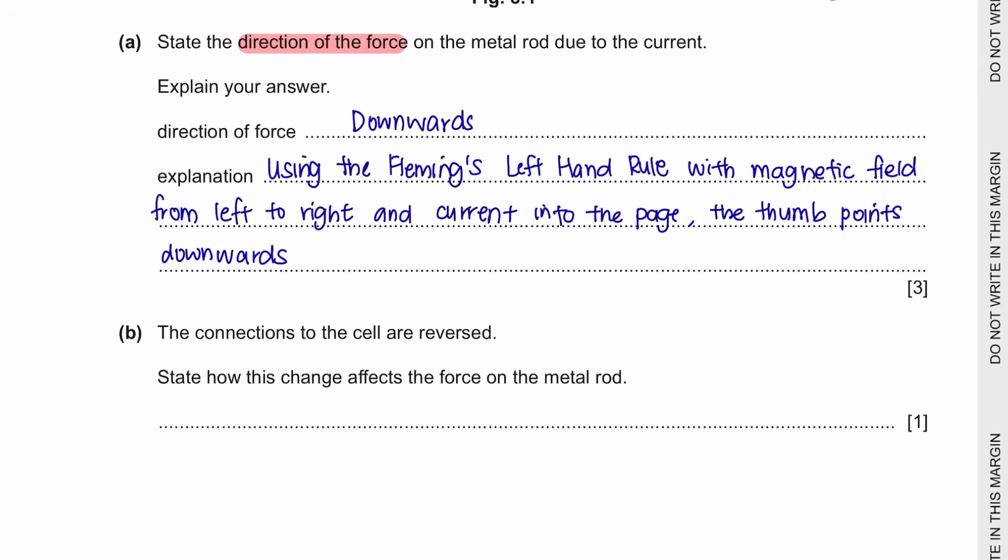And for the explanation, you can use your Fleming's left-hand rule to explain. Question B. The connections to the cells are reversed. State how this change affects the force on the metal rod. So if the current is reversed to the opposite direction, then the force will also be on the opposite direction, in this case upwards.